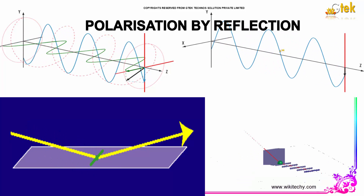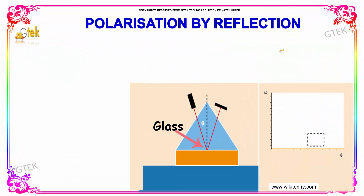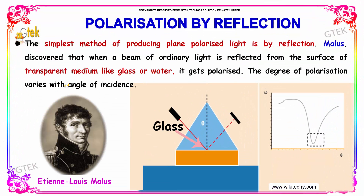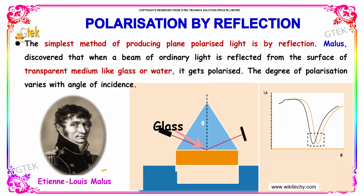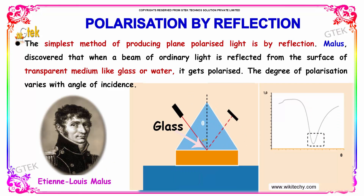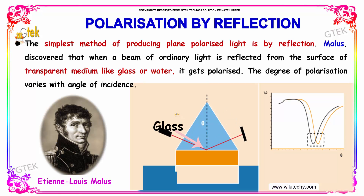Now we will talk about the polarization by reflection. The simplest method of producing plane polarized light is by reflection. Malus discovered that when a beam of ordinary light is reflected from the surface of a transparent medium like glass or water, it gets polarized. The degree of polarization varies with the angle of incidence.